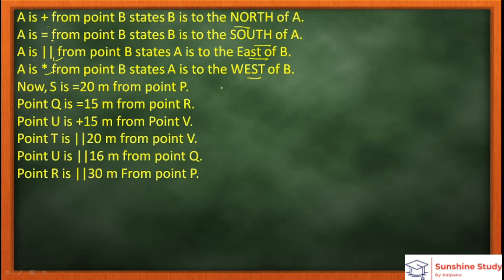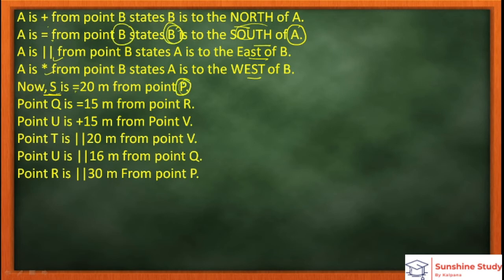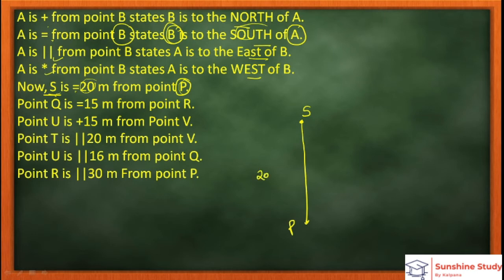S is equals to 20 meters from point P. Equals means South, but the statement goes from B to A. So we reverse: P is to the South of S, meaning S is above and P is 20 meters below S. Next: Q is equals to 15 meters from point R. So R is to the South of Q, meaning R is 15 meters below Q.